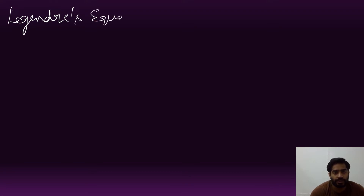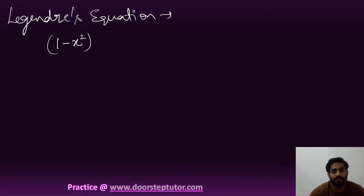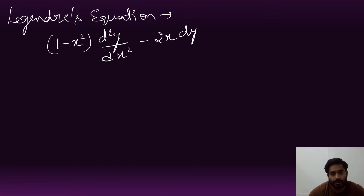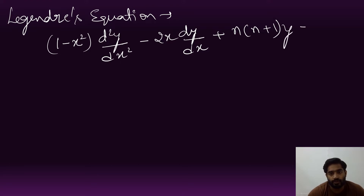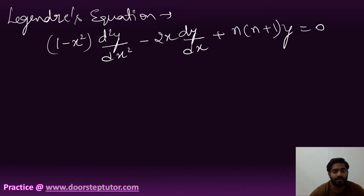What is the Legendre equation, or what we can say, Legendre's differential equation? It is of second order: (1 minus x squared) d²y/dx² minus 2x dy/dx plus n(n+1)y equals 0.